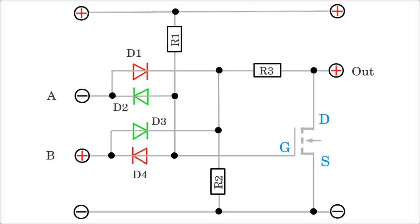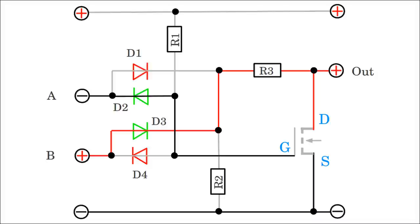Let's have a look at the circuit while input A is low and input B is high. Now the drain voltage of the transistor is provided by input B while the gate of the device is pulled to ground by input A. Once more the transistor is turned off and the potential at the output equals nearly that at input B, which is the positive supply voltage.